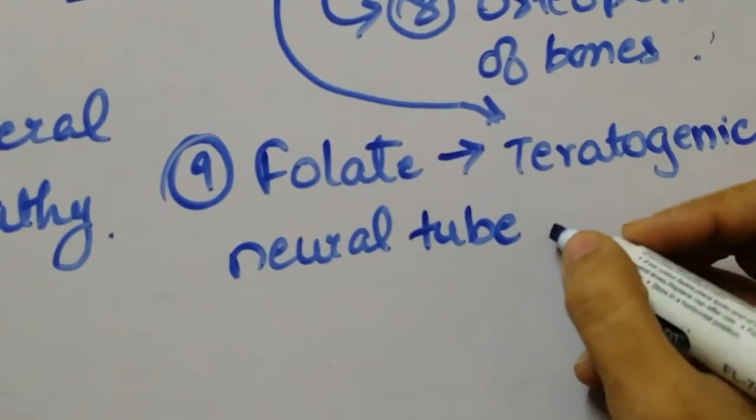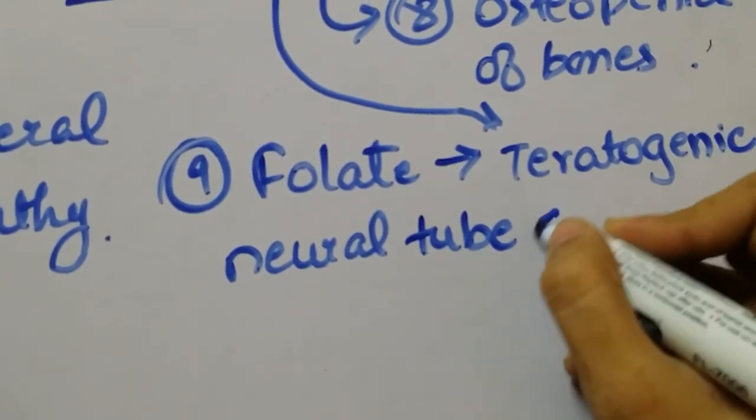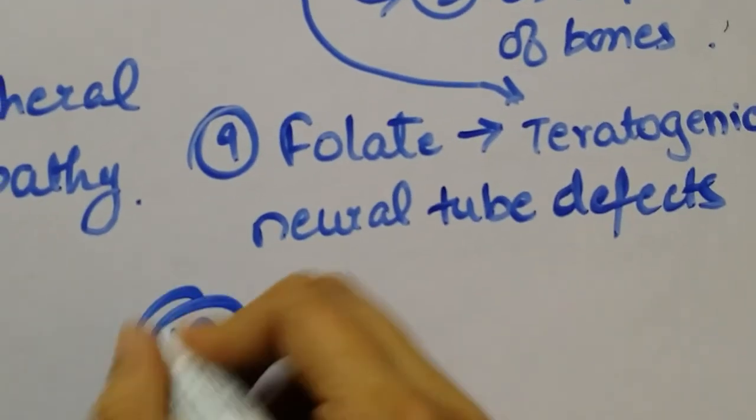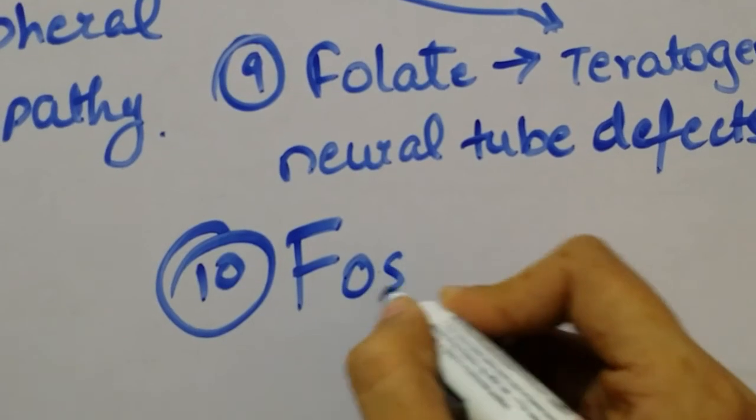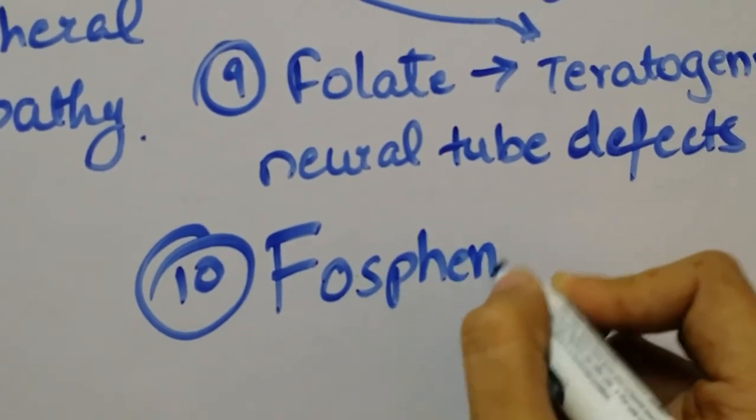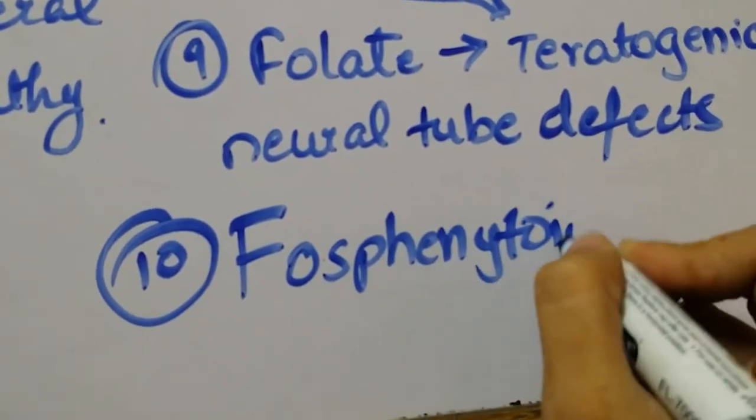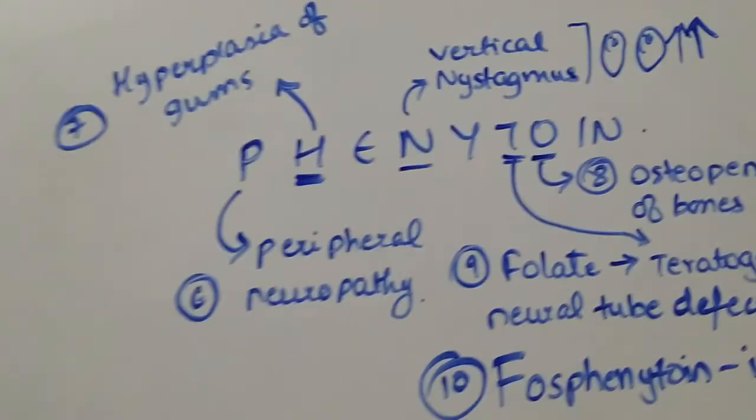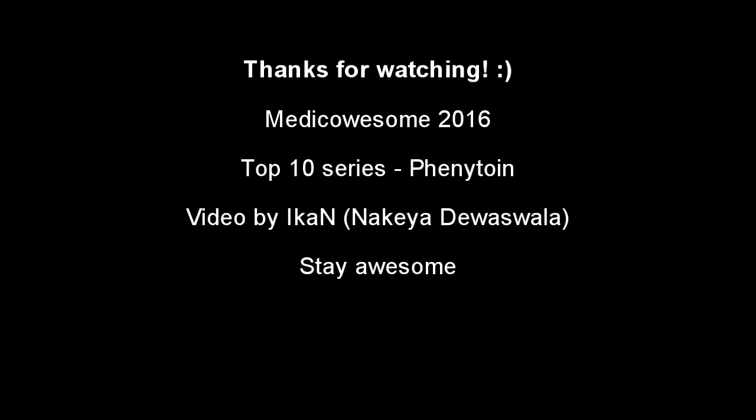Point number ten is about fosphenytoin. It's the brother of phenytoin which can be used IV, has amazing efficacy, and all of that good stuff. So that's ten points about phenytoin. I hope you had fun learning with me, and stay awesome.